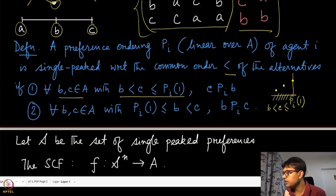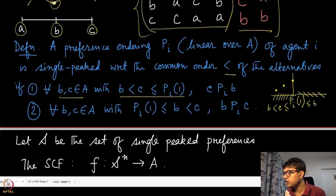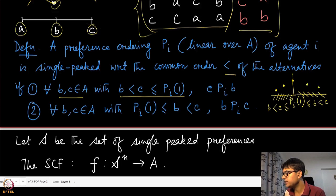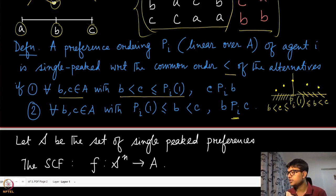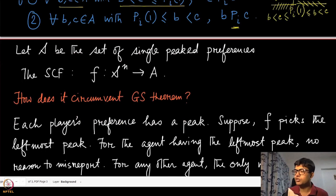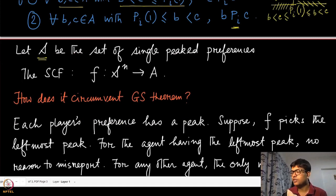Similarly, on the right-hand side: if p_i^1 ≤ b < c, then b is more preferred than c under preference profile p_i. We denote by script S the set of all single-peaked preferences. Therefore, our domain-restricted social choice function maps from S^n to A.